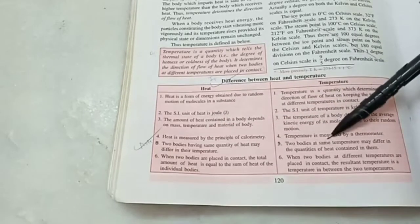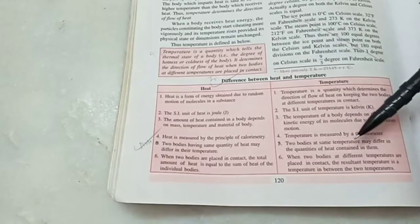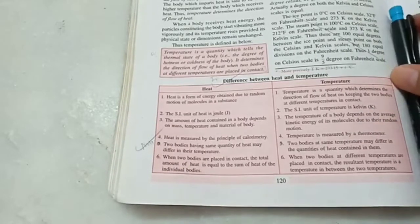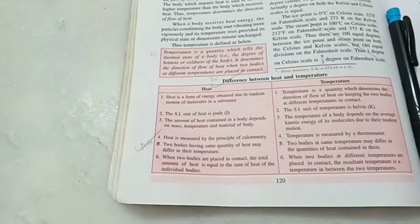And on the other hand, two bodies which have the same temperature, let's say 40 degrees Celsius and 40 degrees Celsius, they may have different amount of heat. A swimming pool at 40 degrees Celsius will have more heat than a bucket filled with water at 40 degrees Celsius, because the mass of the swimming pool is more.